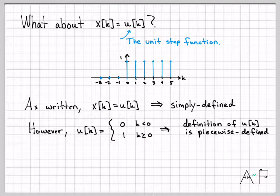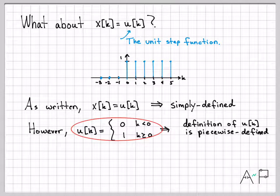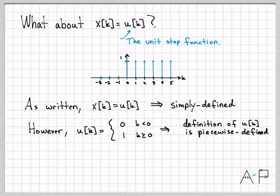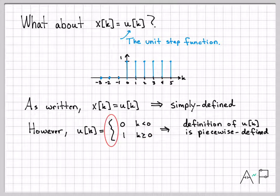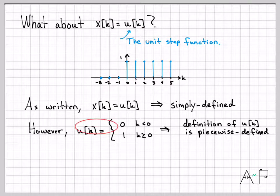So we could argue about this a little bit. Calling x of k a simply defined signal is the right way to do it as written. But if I write out the definition explicitly with a bracket, that's obviously piecewise defined. The practical rule: if you see a bracket, call it piecewise defined; if you see just a single equation, call it simply defined — with the caveat that there can be hidden piecewise structure in the notation. That's the end of this video on simply defined and piecewise defined signals. We'll move on to the next signal property in the next video.